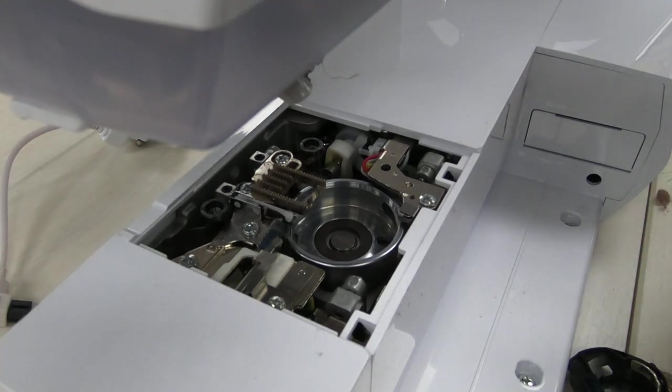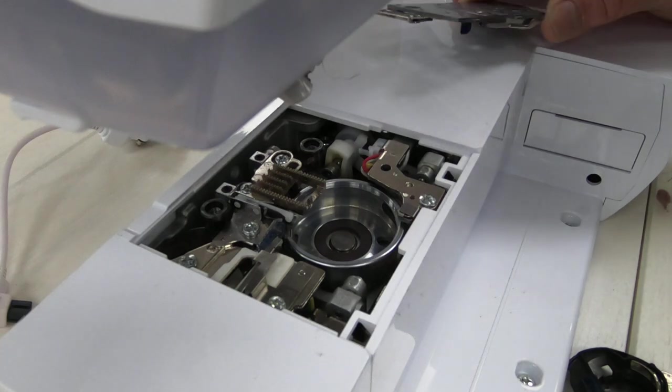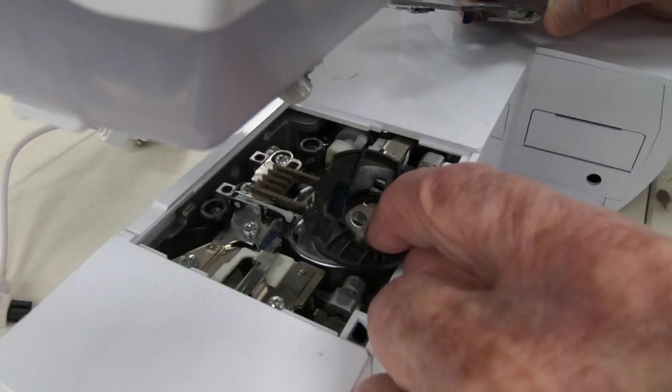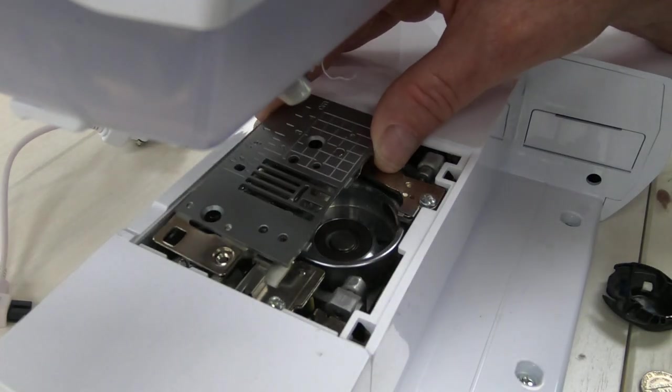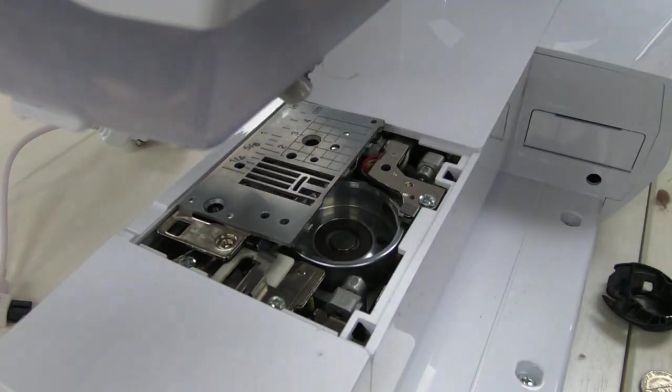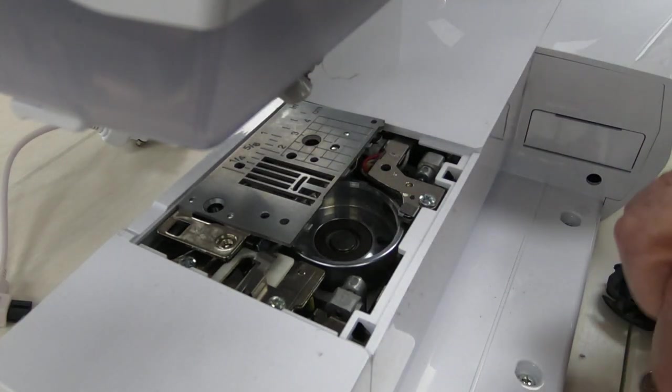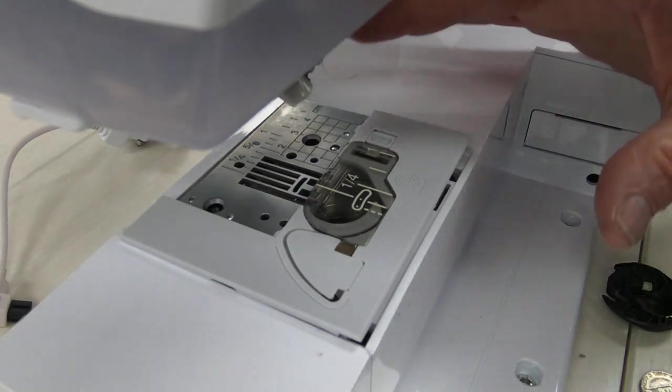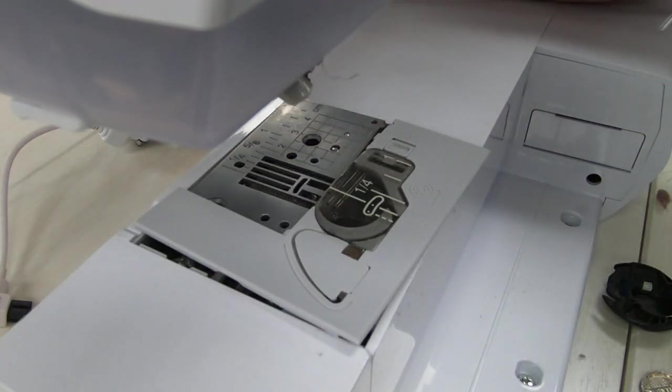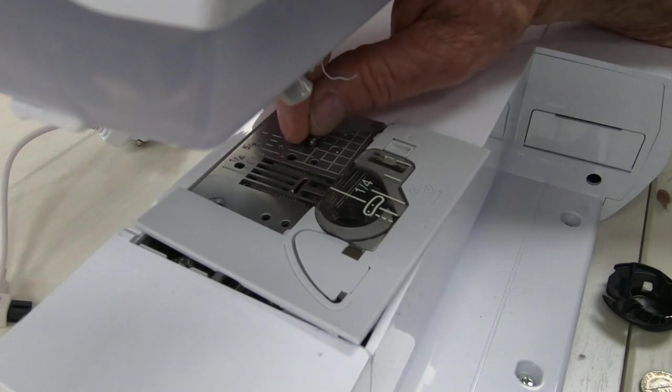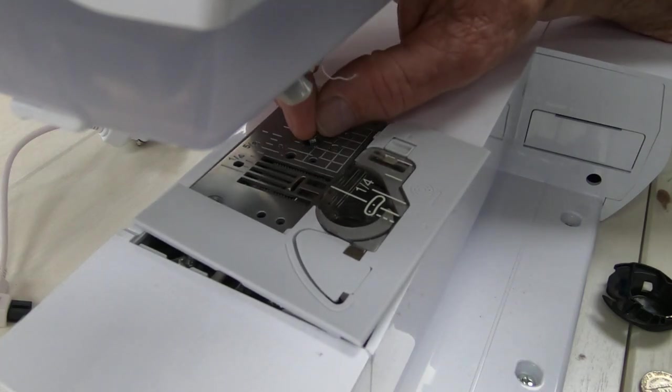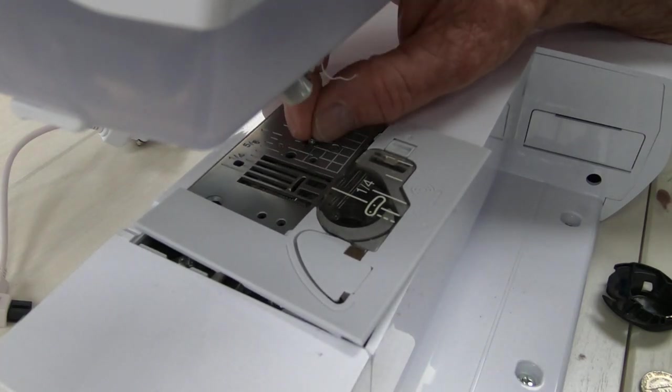Once you get everything in on a Baby Lock, some machines you have to put in the bobbin first. On a Baby Lock, they recommend putting in the needle plate first, and I'll tell you why in a second. Again, just lay that on there, and then if you drop one of these little screws, you're not dropping it down into the bottom of the machine. Don't ask me how I know.